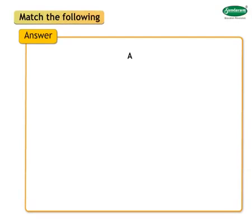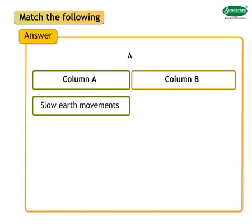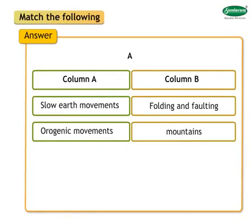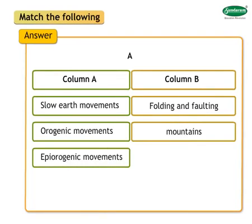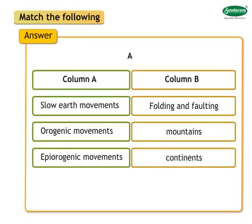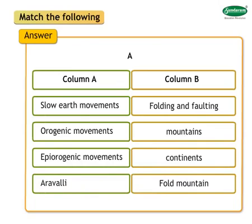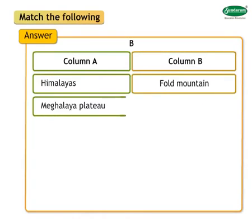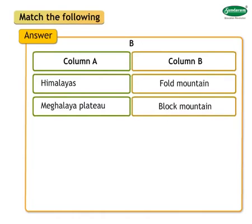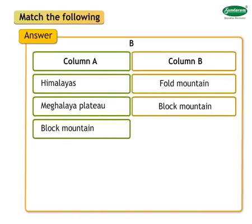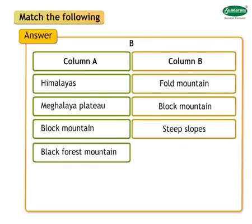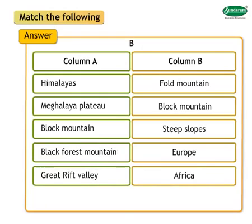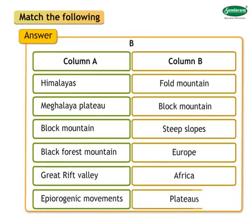Match the following: slow earth movements with folding and faulting, orogenic movements with mountains, epi orogenic movements with continents and plateaus. Examples include the Aravali and Himalayas fold mountains, Meghalaya plateau and Black Forest as block mountains, and the Great Rift Valley in Africa.